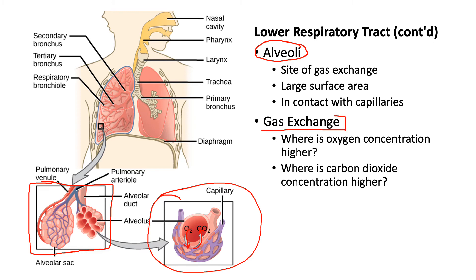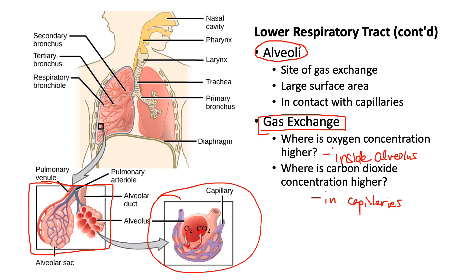The function of the respiratory system is to take in oxygen and get rid of carbon dioxide. There's the breathing mechanism, but also this gas exchange occurring between the lungs and the blood supply. Where is the oxygen concentration higher? It's going to be higher inside the alveolus when you breathe in. Where is the concentration of carbon dioxide higher? That's going to be higher in the capillaries, because these are carrying the carbon dioxide waste back from the cells and tissues. Diffusion then causes oxygen to move from inside the alveolus into the blood, and carbon dioxide to diffuse from the capillaries into the alveolus.